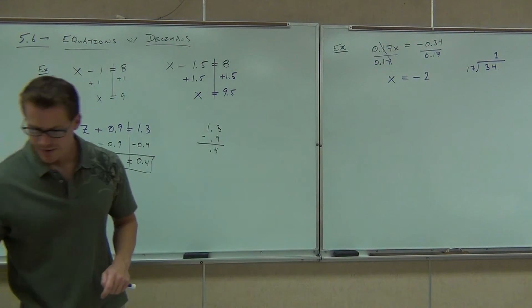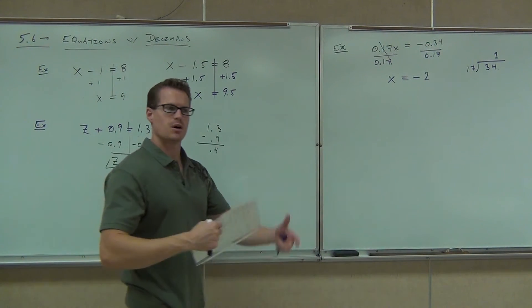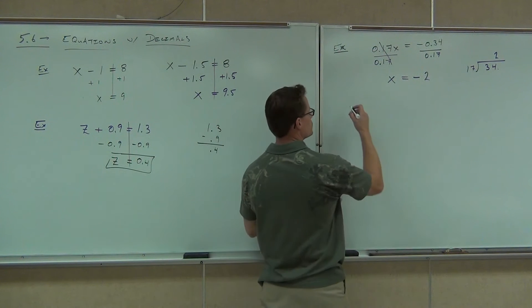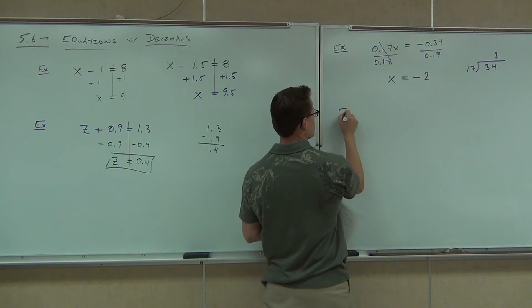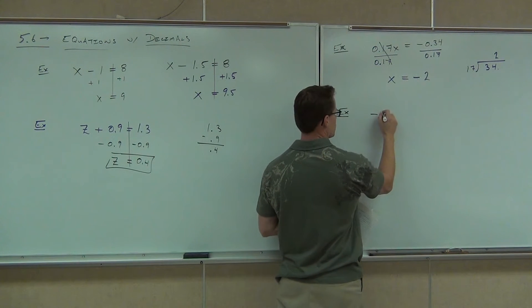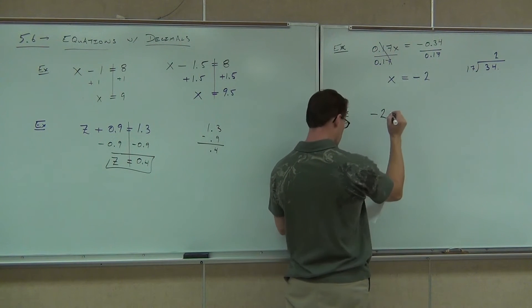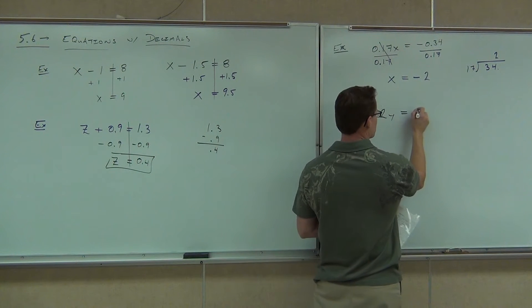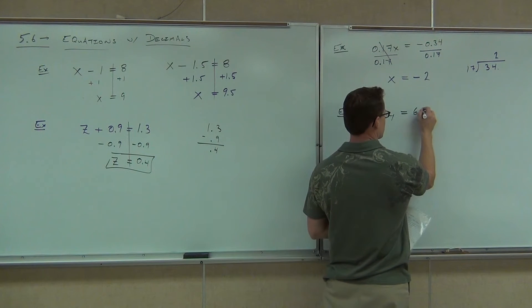Try one of these on your own, and then we'll start building these problems up little by little. The problem is: negative 2y equals 6.7.